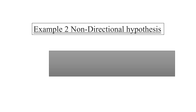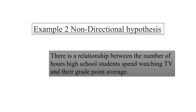Example number two of the non-directional hypothesis: There is a relationship between the number of hours high school students spend watching TV and their grade point average. There exists a relationship, but there is no indication of what type — whether it is a positive relationship or a negative relationship. So this is an example of a non-directional hypothesis.